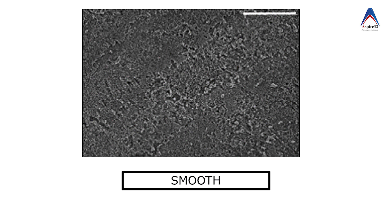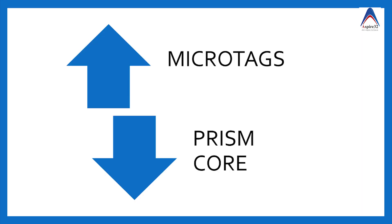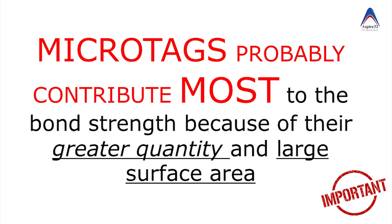The demineralized periphery of the enamel prisms leads to the formation of macrotags, and the demineralized core structure of the enamel prisms leads to the formation of microtags. The role of microtags is more important in bonding because they tend to form in greater numbers and have more surface involvement.